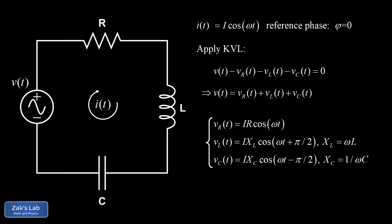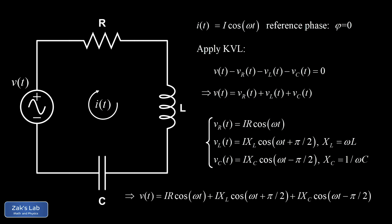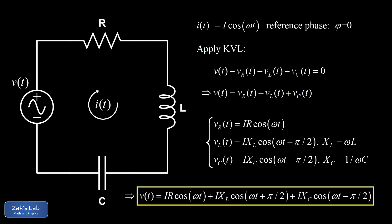The capacitor and inductor can conspire with each other to actually reduce the total resistance of the circuit, depending on the frequency. Substituting all this into our formula for v(t), at first glance we have a sum of three phase-shifted cosines to simplify — a huge challenge using trig identities. Fortunately, there's a better way: the phasor representation.